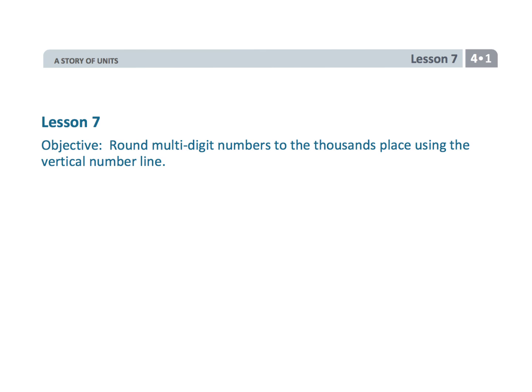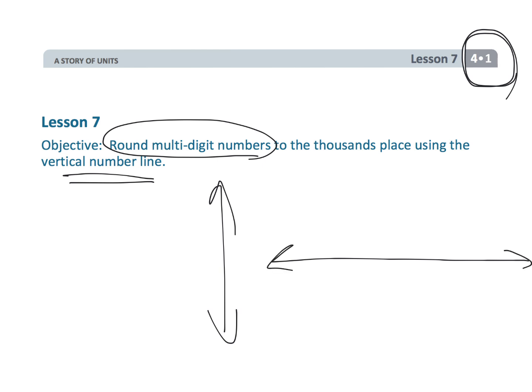And that wraps up this lesson, fourth grade, module one, lesson seven, where really the focus is helping students build that vertical number line so that they understand that rounding is really just identifying where the number lives on the number line and deciding where it's closest to. By the way, does it have to be a vertical number line? No. Teachers, if you want, for some reason, if you want to do a horizontal number line, you're more than welcome to do that as well.